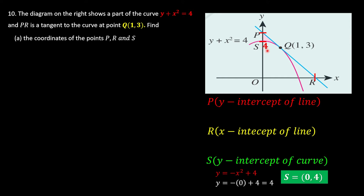To find the equation of the straight line, we first need to know the gradient. Since this is a tangent to the curve at that point, they will have the same gradient as the curve. We start from y + x² = 4, rearranging to y = -x² + 4. Then, using differentiation as a master key to find the gradient function, once we have it we can find the gradient at any point.